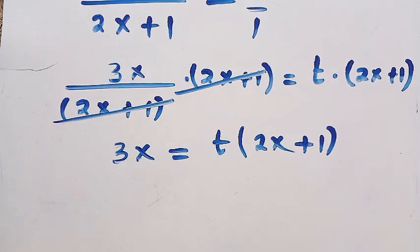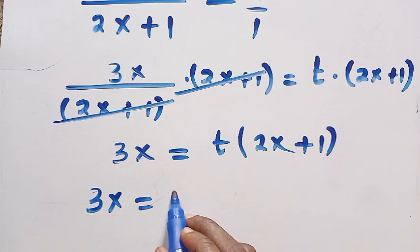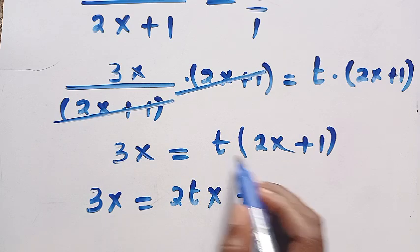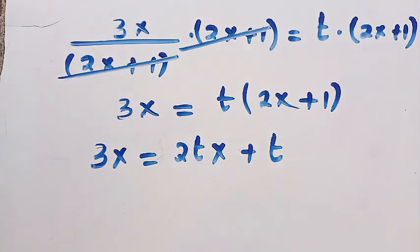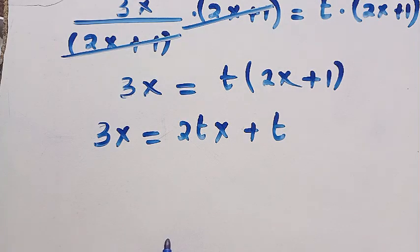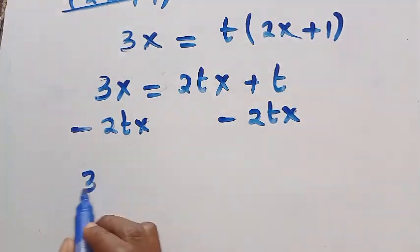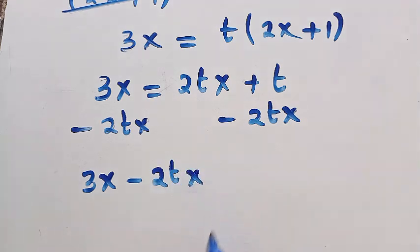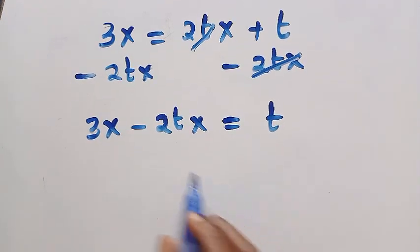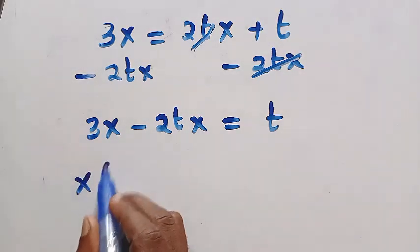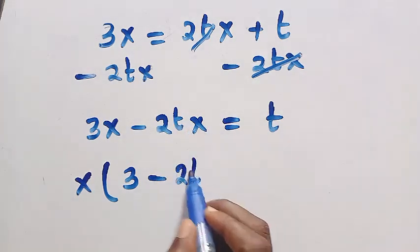We want to make x the subject, so we open the parenthesis: 3x equals t times 2x, which is 2tx, plus t times 1, which is t. To isolate x, we subtract 2tx from both sides, giving 3x minus 2tx equals t. We then factor out x, so x times the bracket 3 minus 2t equals t.